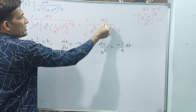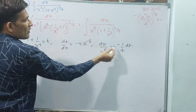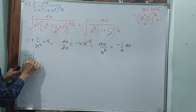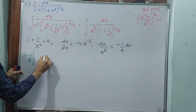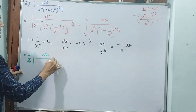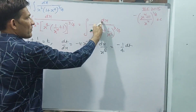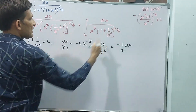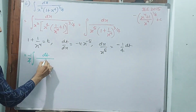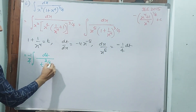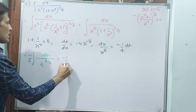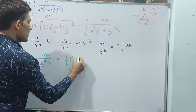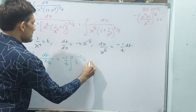Now simply substitute all. Integral dx by x to the power of 5, minus 1 by 4 outside, dt simply. Divide it by x to the power of 5 — already this is t, you have taken t. t power 3 by 4. That is equal to minus 1 by 4 integral t power minus 3 by 4 dt.